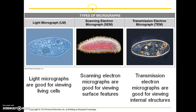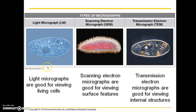A micrograph is simply an image that is taken with the aid of a microscope. We have a light micrograph image here of a cell. They're good for viewing living cells such as paramecium. Typically with biology textbooks there will be a photo caption — sometimes on the side, sometimes on the bottom — that will show you what type of micrograph it is. They're usually abbreviated as LM, SEM, or TEM, as a guide to show you what those abbreviations mean.